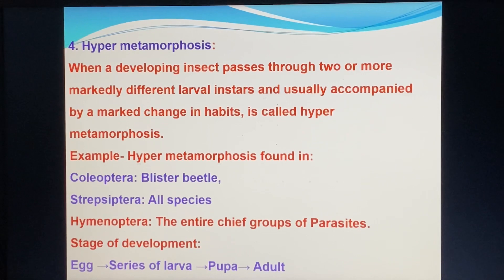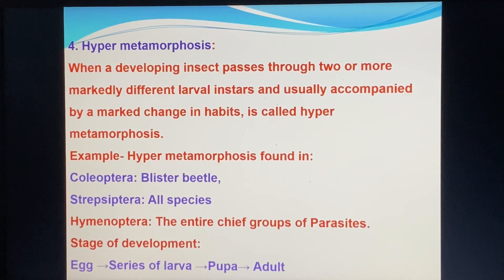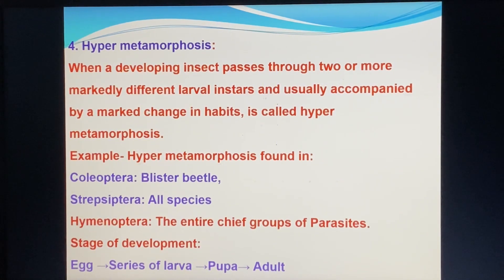Hypermetamorphosis: when a developing insect passes through two or more markedly different larval stages, usually accompanied by a marked change in habit, it is called hypermetamorphosis.